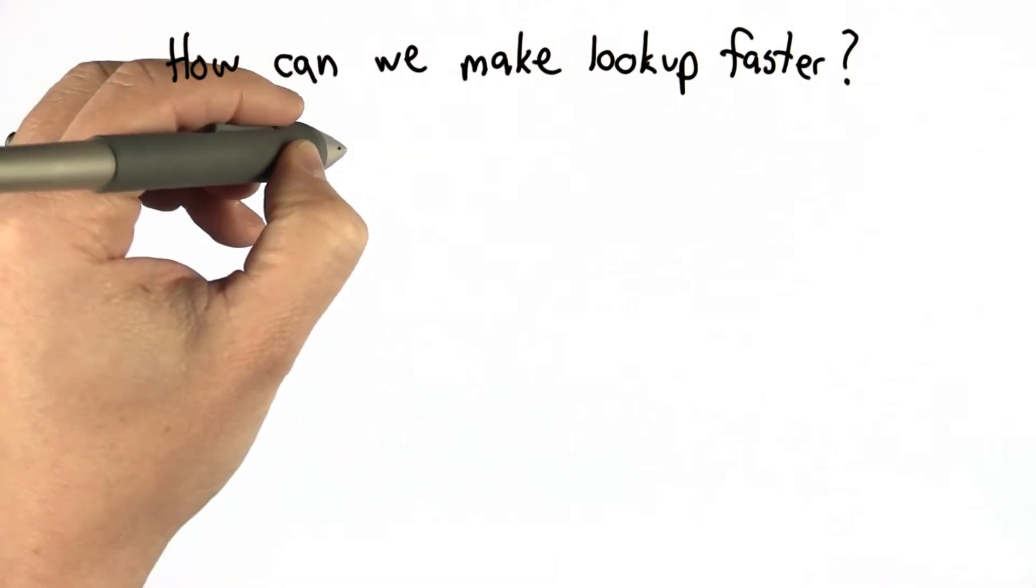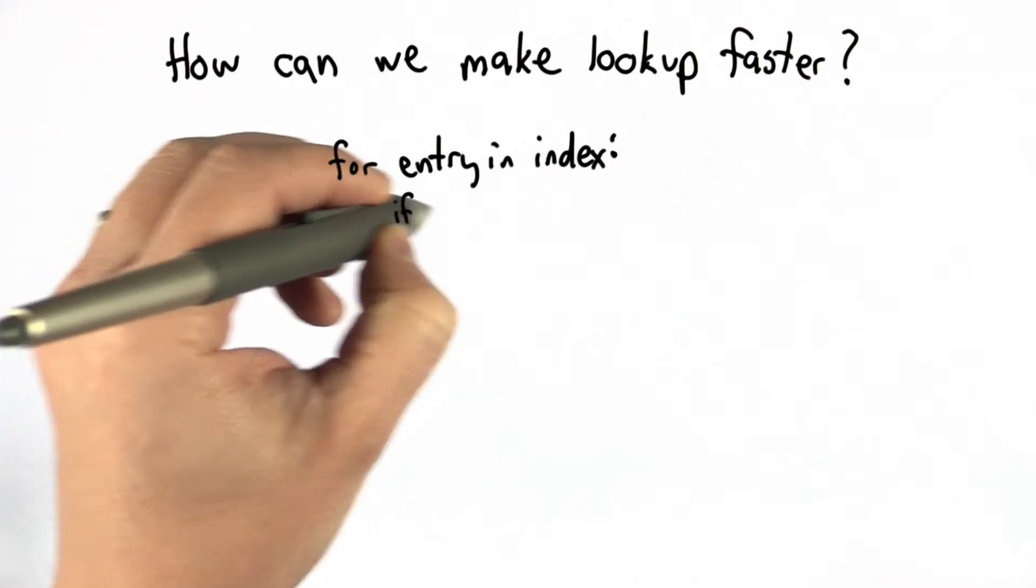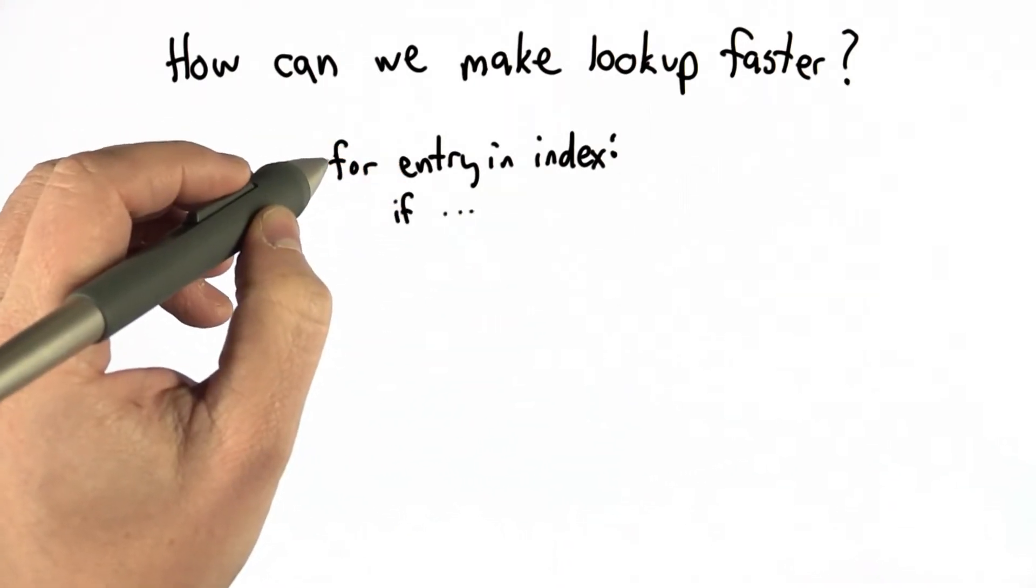The reason it was so slow is that we were doing this for loop. We're going through all the elements in order, and we're checking if they match the keyword. And we had to do this going through the entire index.